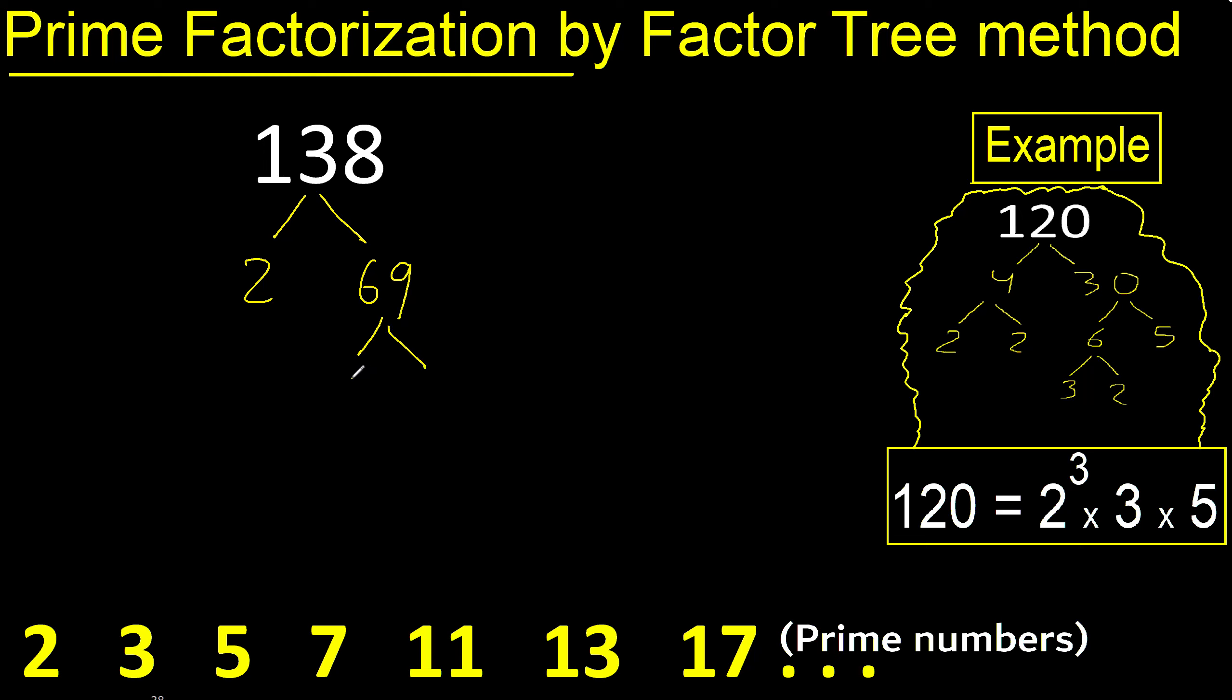Here, 69 cannot be divided by 2, can be divided by 3. Therefore, 69 divided by 3 is 23.